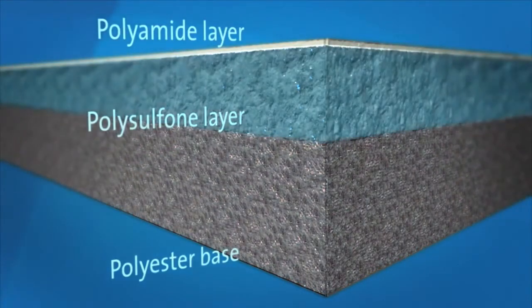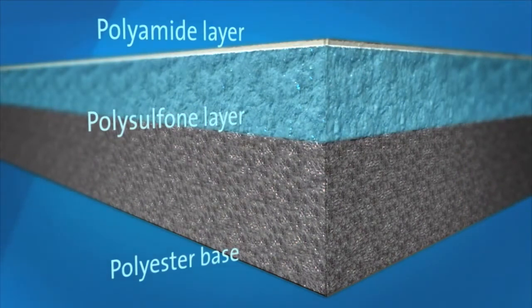Reverse osmosis membranes are constructed from a membrane flat sheet. It is comprised of three layers: a polyester fabric support base, a microporous polysulfone layer, and a 0.2 micron thick polyamide barrier layer.